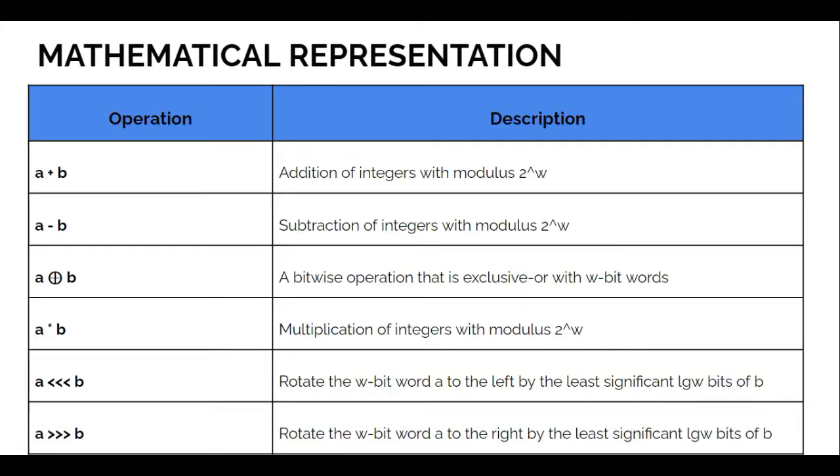Here are the six fundamental operations of the RC6 algorithm. The first is A plus B, addition of integer with modulus 2 power of W. Next, A minus B, subtraction of integer with modulus 2 power of W. Next, A exclusive or B, a bitwise operation that is exclusive or with W bit words. Next, A multiply B, refers to multiplication of integer with modulus 2 power of W. Next is rotate the W bit word of A to the left by least significant logarithm bits of B. The last is rotate the W bit word of A to the right by least significant logarithm bits of B.